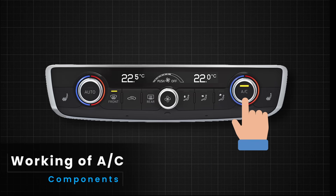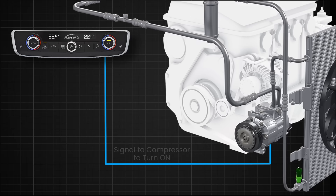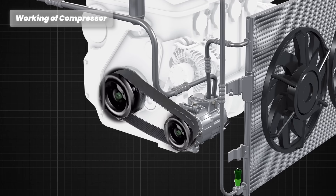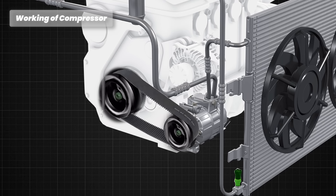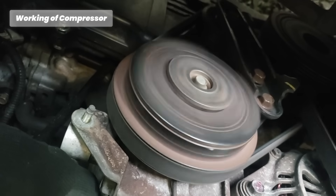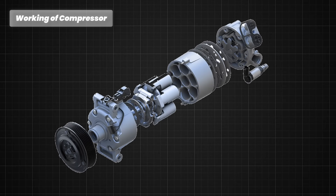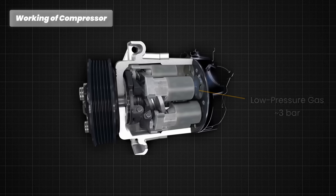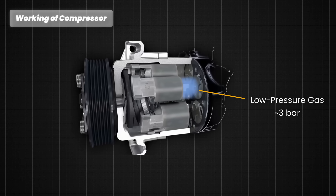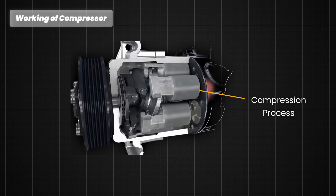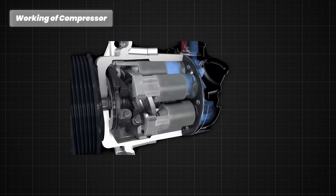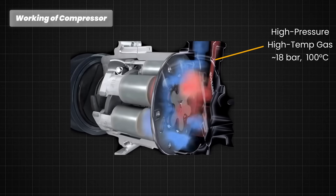When the AC is turned on, the climate control unit sends a signal to engage the AC compressor clutch. The compressor is typically belt-driven, meaning it is connected to the engine's crankshaft pulley via a belt. As the engine runs, it drives the compressor, providing the mechanical energy necessary to compress the refrigerant gas. The compressor consists of one or more pistons housed inside cylinders, which compress the refrigerant. The refrigerant initially enters the compressor as a low-pressure gas, and is then compressed, which increases its pressure and temperature significantly. The refrigerant exits the compressor as a high-pressure, high-temperature gas.